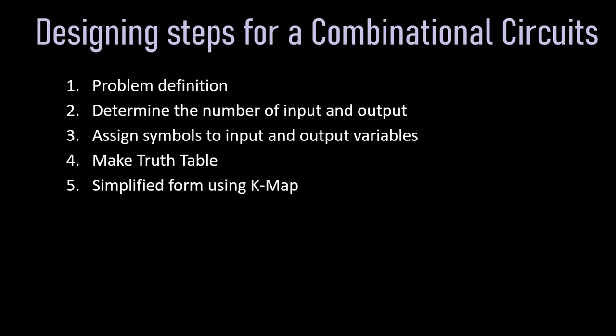After making the truth table, we will simplify it using a K-map. After simplifying the truth table we will have a simplified Boolean expression, and then we are going to implement it using simple logic gates. The last step is to draw the logic diagram for the problem statement. These are the steps by which we can design a combinational circuit.